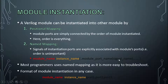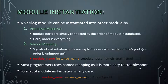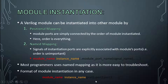For name mapping, you follow this generalized syntax: module name, followed by the name of the module instantiation, followed by dot-module-port and the signal name. Most programmers use name mapping as it is easier to troubleshoot, and we are going to use name mapping as well because it is easy to troubleshoot and define.